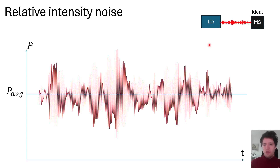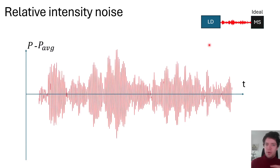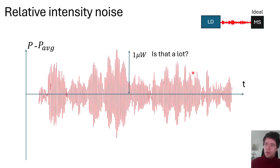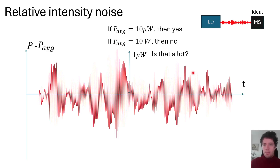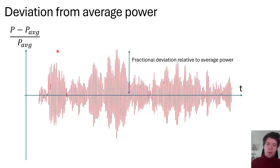First, we notice this measurement has a certain average power over its duration. We begin by subtracting that average power from the original measurement, giving us a new trace showing the deviation away from the average power at any given instant — for example, maybe one microwatt. To normalize this, we divide through by the average power, giving a fractional deviation trace that's easier to compare across different lasers.